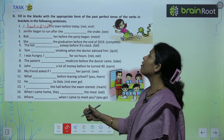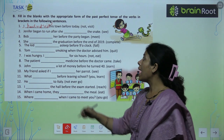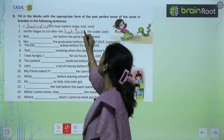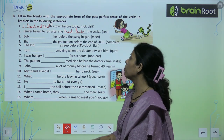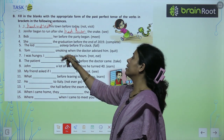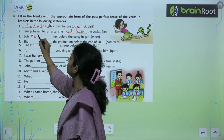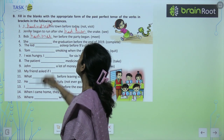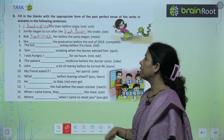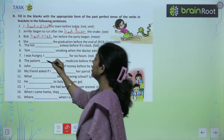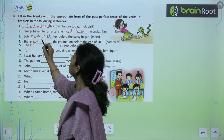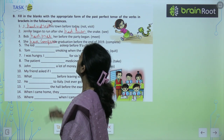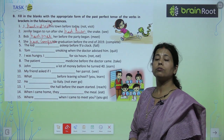Jennifer began to run after she had seen the snake. Bob had met her brother before the party began. She had completed her graduation before the end of 2019.